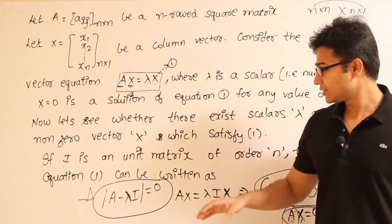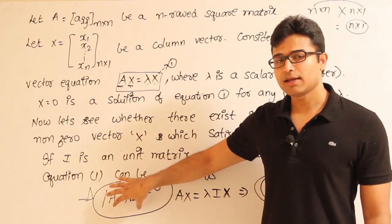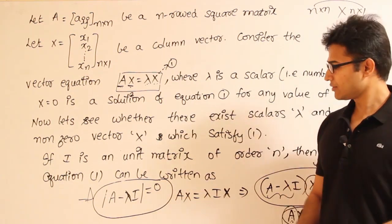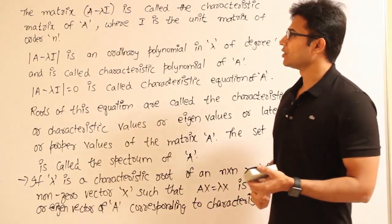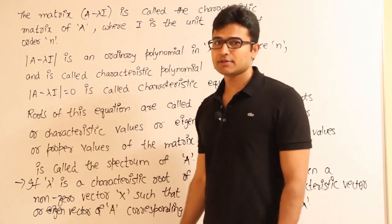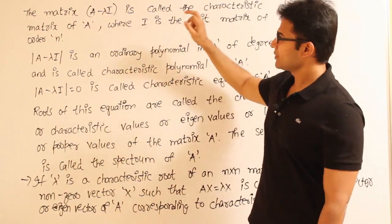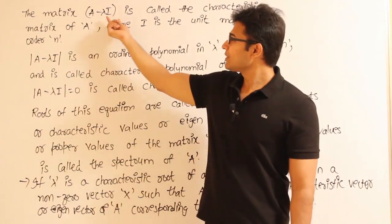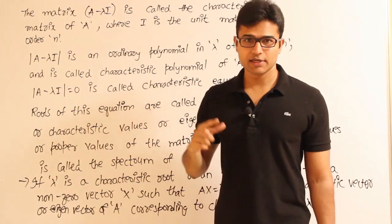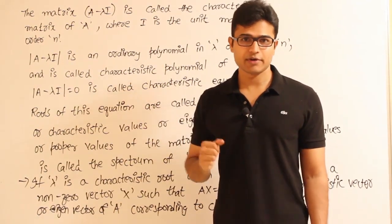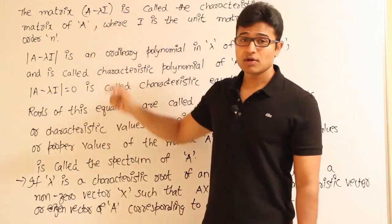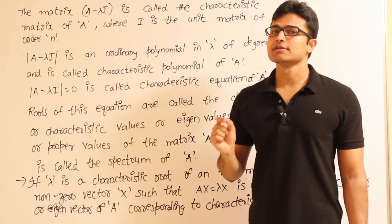Now let's look at the important terminology. The matrix (A − λI) is called the characteristic matrix of A because it plays an important role in finding eigenvectors and eigenvalues. In the equation (A − λI)X = 0, this matrix acts as the coefficient matrix. I is the unit matrix of order n.